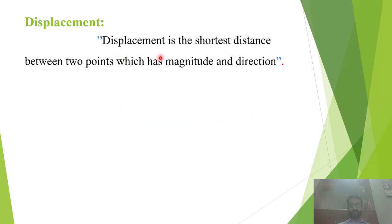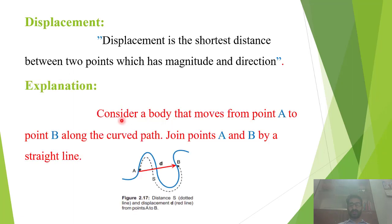Displacement is the shortest distance between two points which has magnitude and direction. Distance میں ہم نے دیکھا کہ distance، length of path ہوتی ہے between two points۔ اسی طرح displacement کسی بھی دو points کے درمیان shortest distance ہوتا ہے جس کی کچھ magnitude بھی ہوتی ہے اور اس کی کچھ direction بھی ہوتی ہے۔ Consider a body that moves from point A to point B along the curved path. Join points A and B by a straight line.